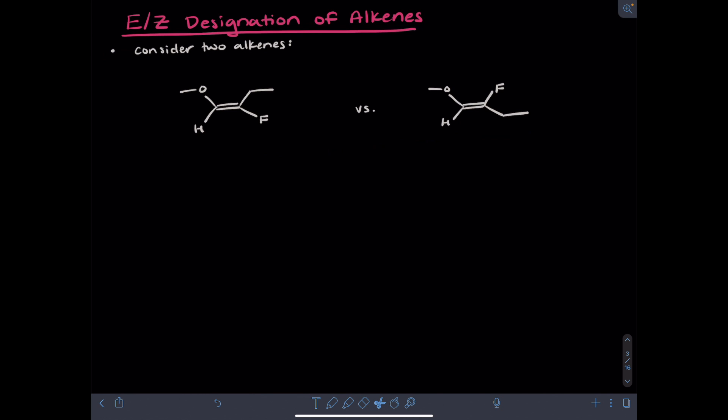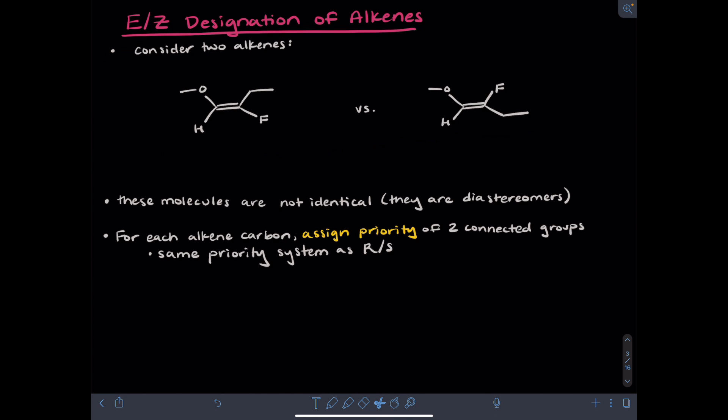Let's consider the following two alkenes. Notice that these two molecules have different placements of the ethyl and fluorine group relative to the left side of the molecule. This means these molecules are not identical — in fact they are diastereomers, non-superimposable and not mirror images of each other. Because the right carbon of each alkene does not have a hydrogen attached to it, we can't describe these alkenes as either cis or trans. Instead, to get the E/Z designation, for each alkene carbon, you're going to assign the priority of the two groups connected to that carbon. This will be the same priority system that we used for R and S stereochemistry.